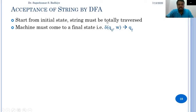We represent it as delta of q0 comma w, which gives qf. This means that when the automata starts in q0 and reads the complete string w, it reaches a final state qf. Then the string w is accepted by the finite automata.